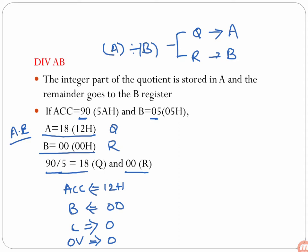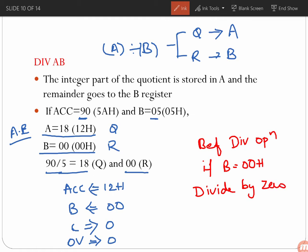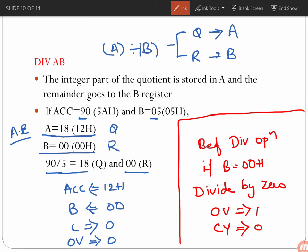If B contains 00H before the division operation, it is an undefined divide-by-zero operation. In that case, the values of the accumulator and B are undefined, and the overflow flag will be set to 1 to indicate the error condition.